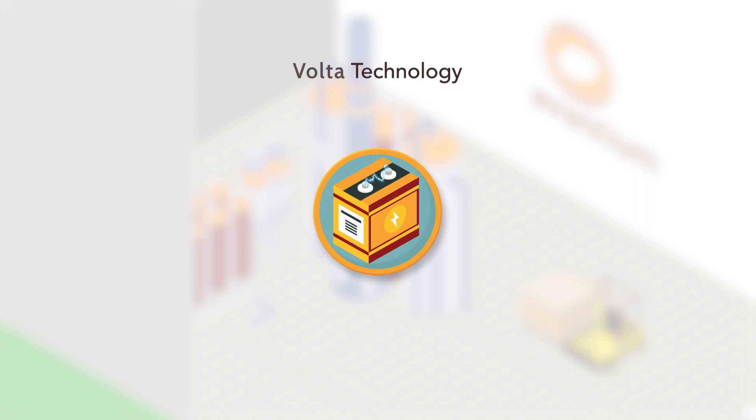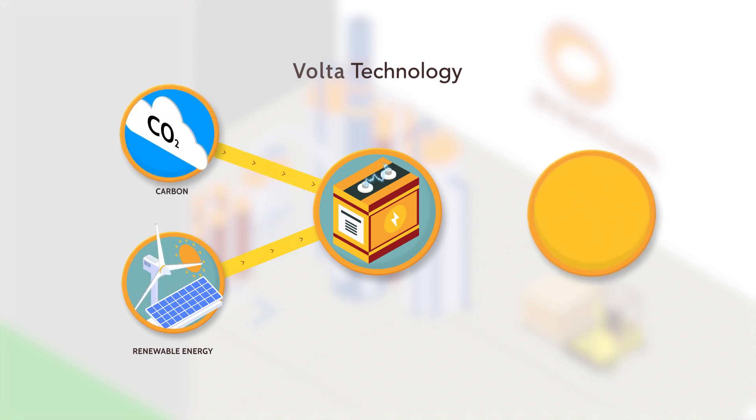Our VOLTA technology uses electrochemistry to convert the carbon into useful chemicals through carbon capture and utilization, which can then be used to produce sustainably sourced materials.